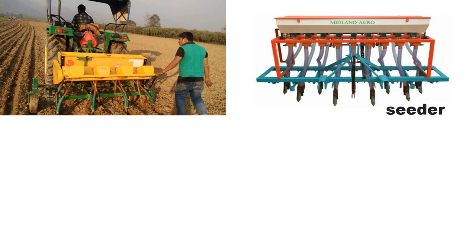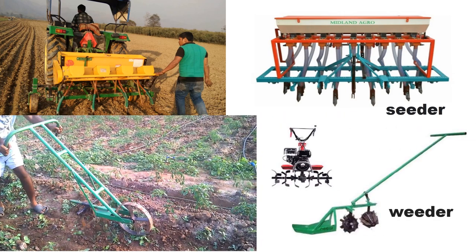This is a seeder. Nowadays, using a tractor-mounted seeder, groundnut sowing is done. A variety of weeders are available in the market and used by farmers. Using these weeders, farmers remove unwanted plants from the crop.